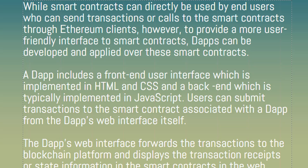However, to provide a more user-friendly interface to smart contracts, dApps can be developed and applied over these smart contracts. A dApp includes a front-end user interface implemented in HTML and CSS, and a back-end typically implemented in JavaScript. Users can submit transactions to the smart contract from the dApp's web interface, which forwards the transaction to the blockchain platform and displays transaction receipts or state information.